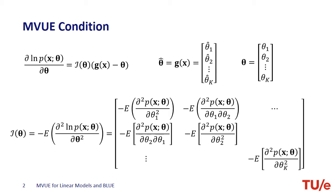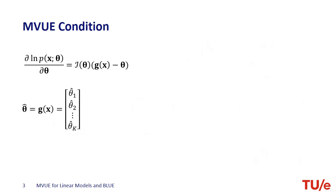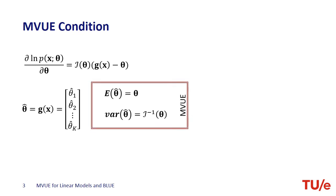What kind of estimator can satisfy this condition? Let's keep in mind the two conditions that are supposed to be satisfied by the estimator Gx. One, its expected value must be equal to the parameter we want to estimate because Gx is an unbiased estimator. And two, its variance must be equal to the inverse of the Fisher information matrix, which is the Cramér-Rao lower bound. These conditions define the minimum variance unbiased estimator.